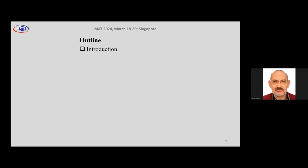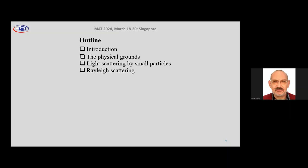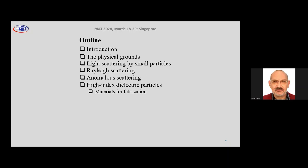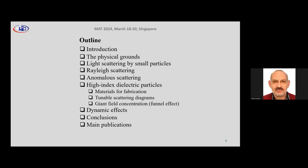I selected the following topics: I will give a brief introduction, then discuss the physical grounds for the phenomena we are looking for. Then we will discuss light scattering by small particles — specifically Rayleigh scattering and a new type of scattering discovered in my group, which we call anomalous scattering, which has very little in common with Rayleigh scattering. Then we will discuss high-index dielectric particles, tunable scattering diagrams, the giant field concentration or funnel effect, dynamic effects, and conclusions.